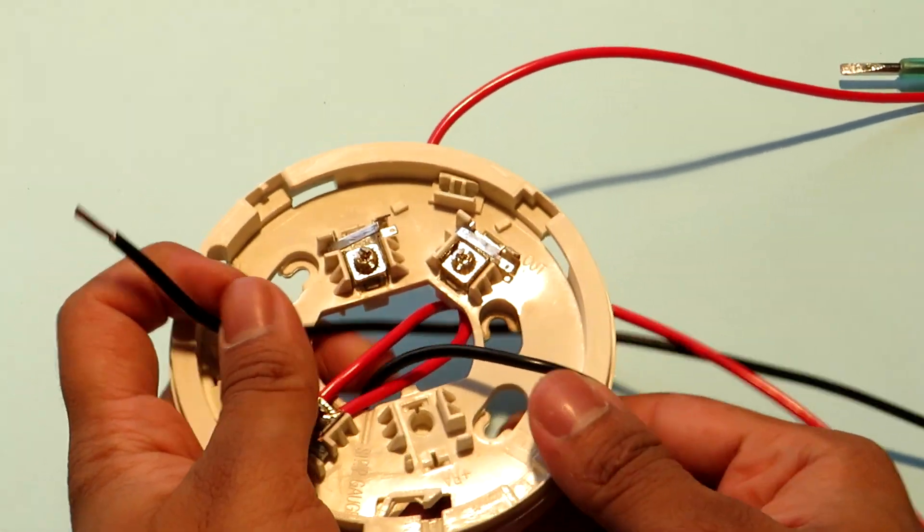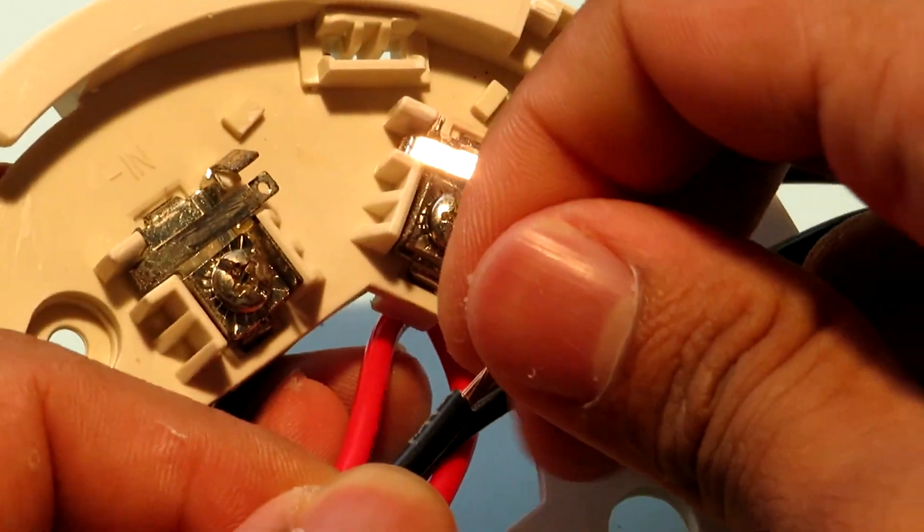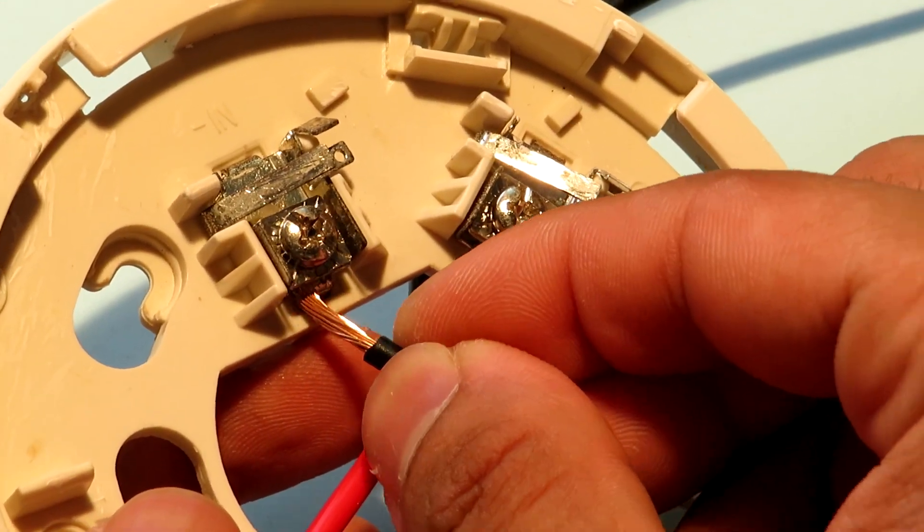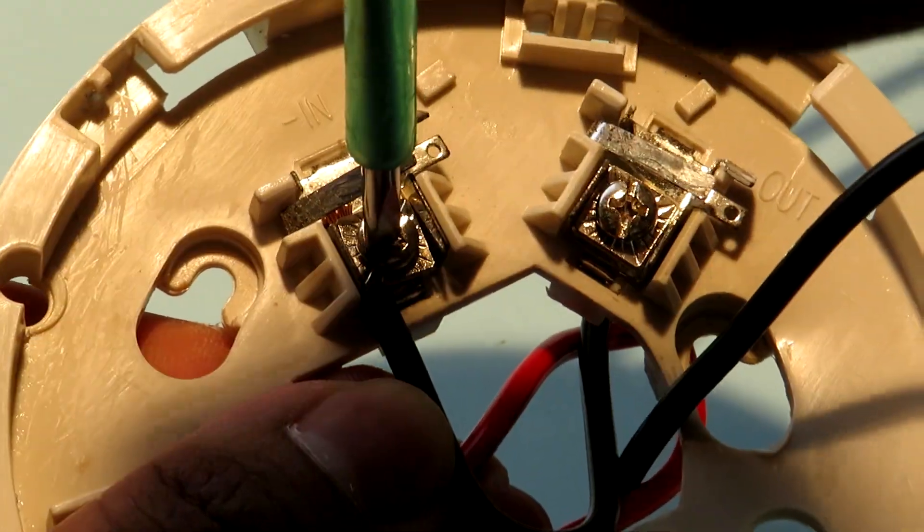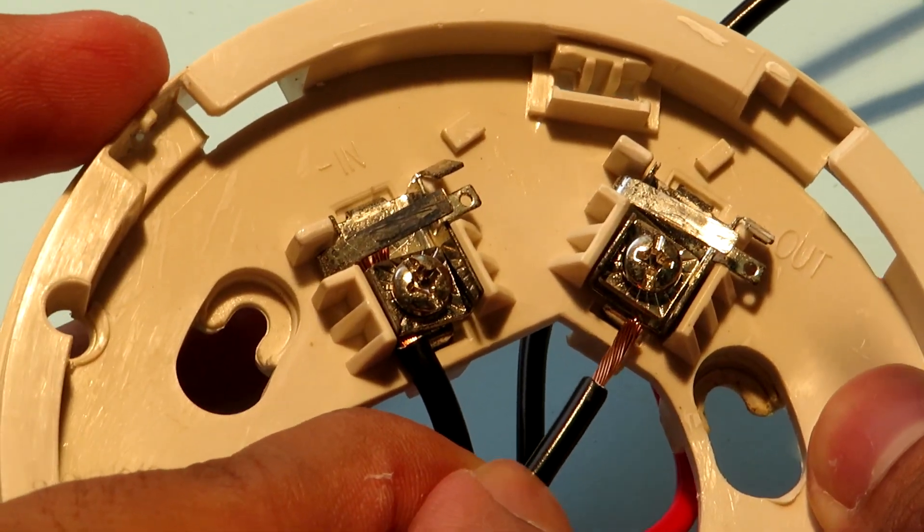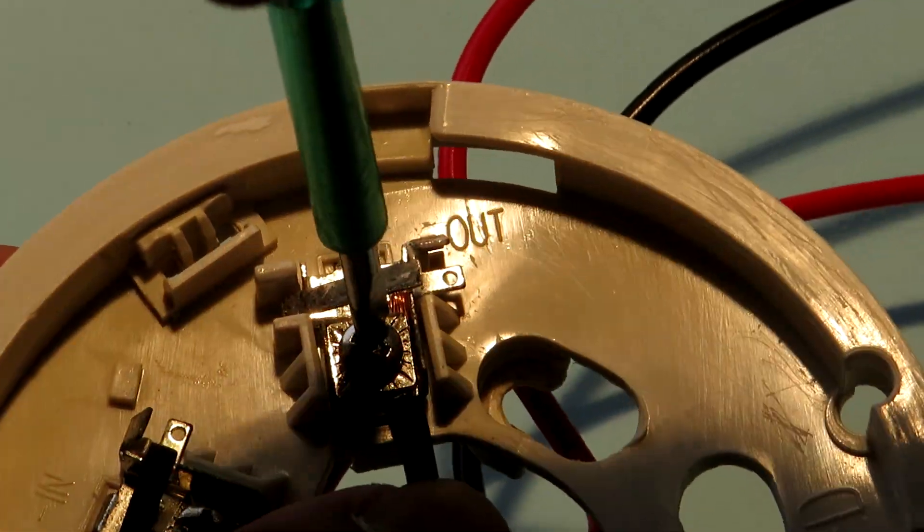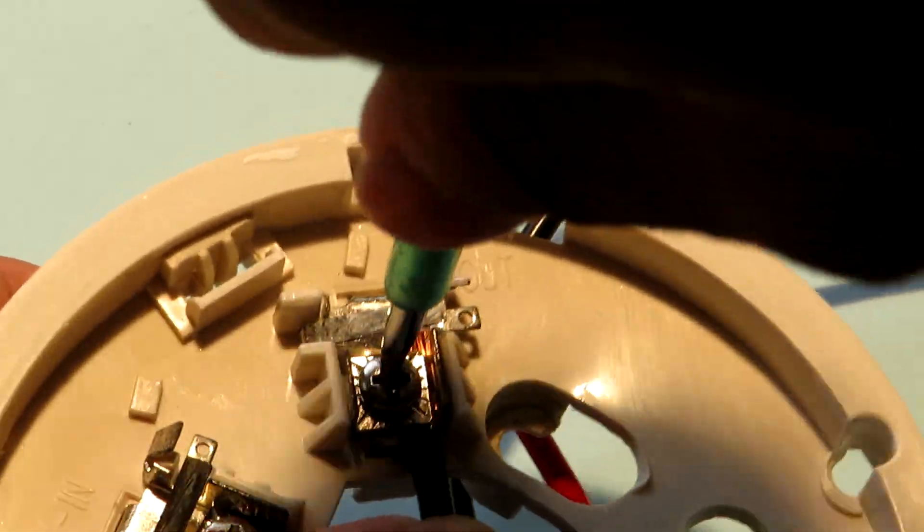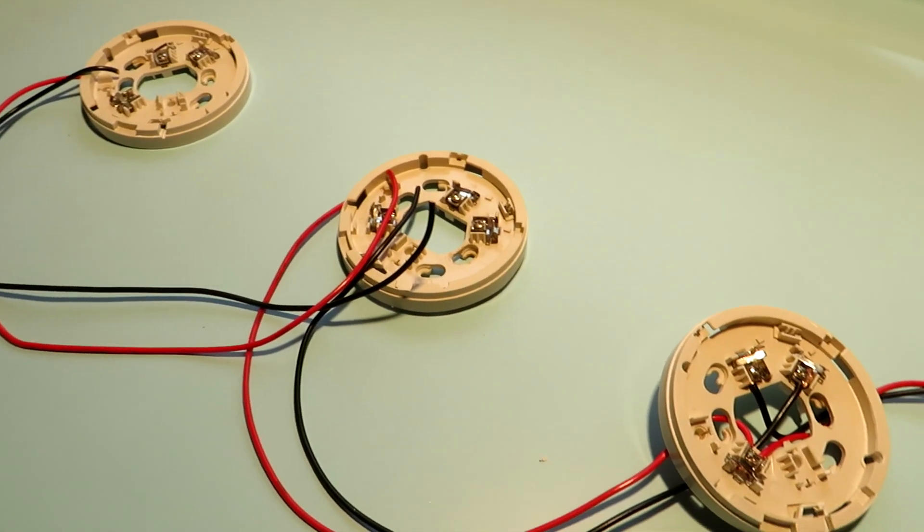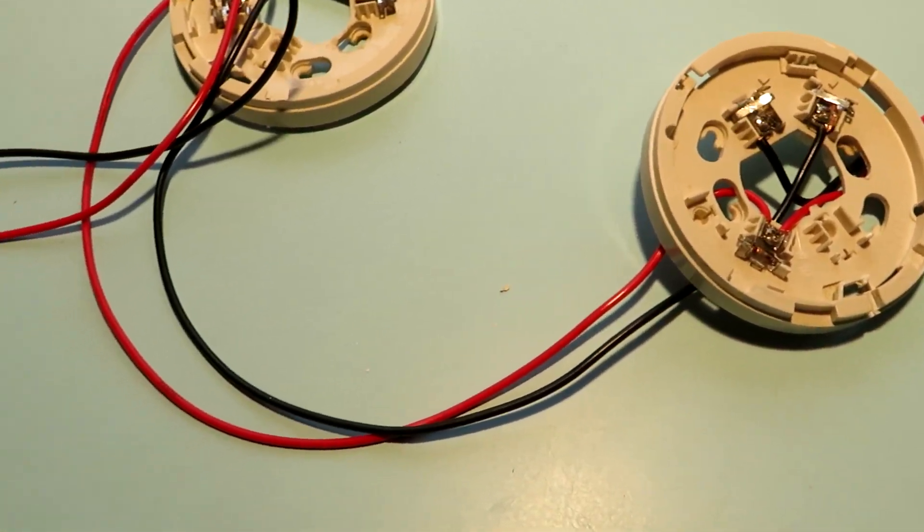Coming to the negative wires, the incoming wire from the fire alarm control panel will go to the terminal labeled negative in. The negative wire going to the next detector in the line will go to the terminal labeled negative out. Practically it doesn't matter even if you interchange negative in and negative out because the sole purpose of it is just to check the continuity and interchanging in and out will not matter there. So we have successfully connected our first detector in the line.